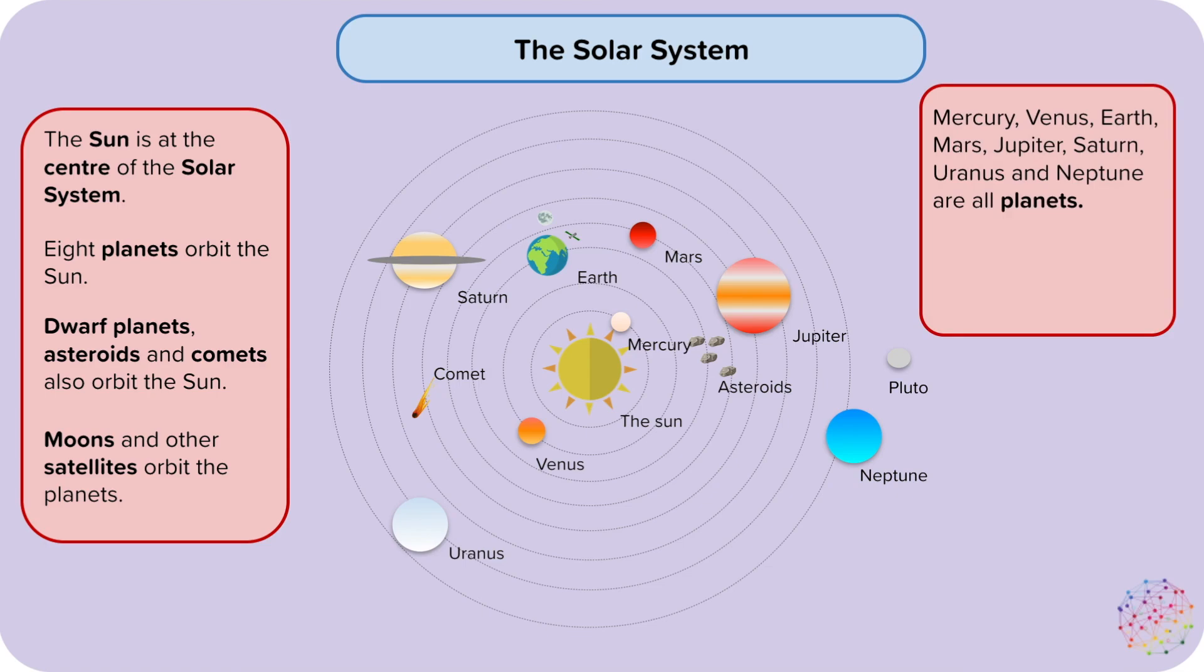Mercury, Venus, Earth, Mars, Jupiter, Saturn, Uranus, and Neptune are all planets.